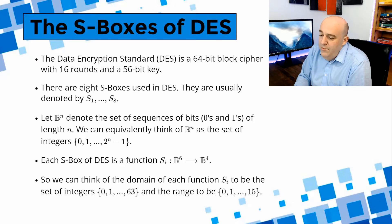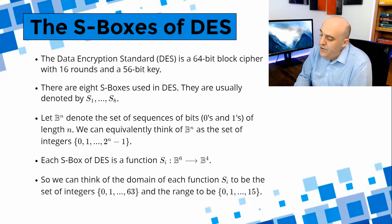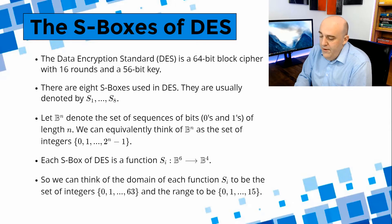Let BN denote the sequences of bits of length N — sequences of zeros and ones of length N. We can equivalently think of BN as just the set of integers from 0 up to 2^N minus 1 in base 10. Each S-box of DES is a function, which we denote SI, going from B6 to B4. So there are six input bits, and the function returns four output bits.